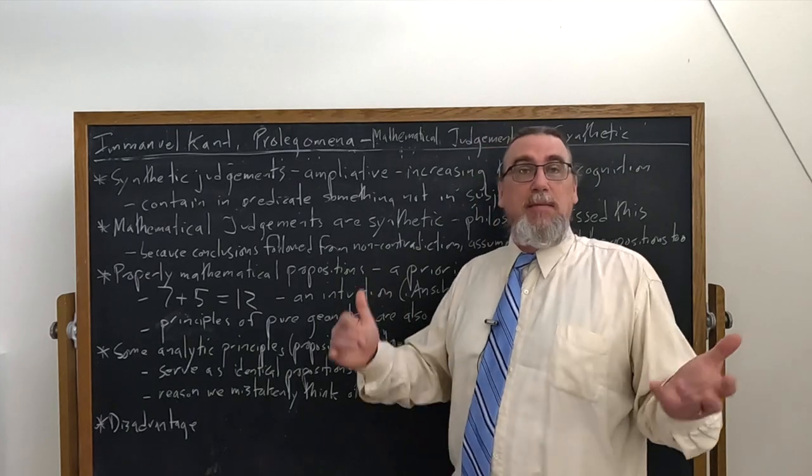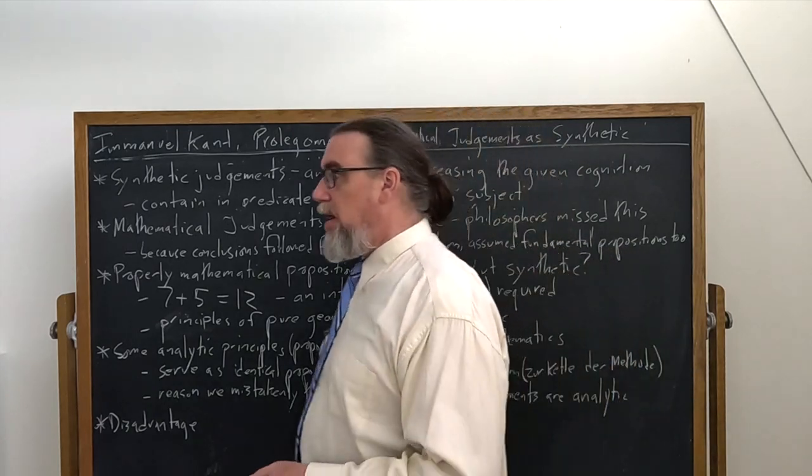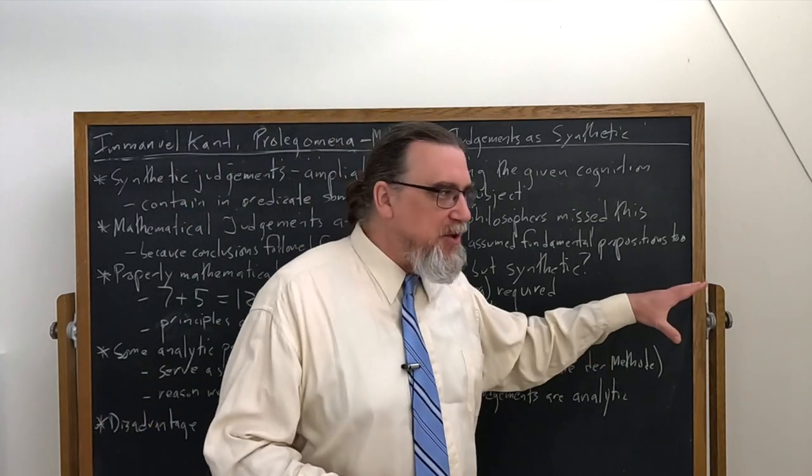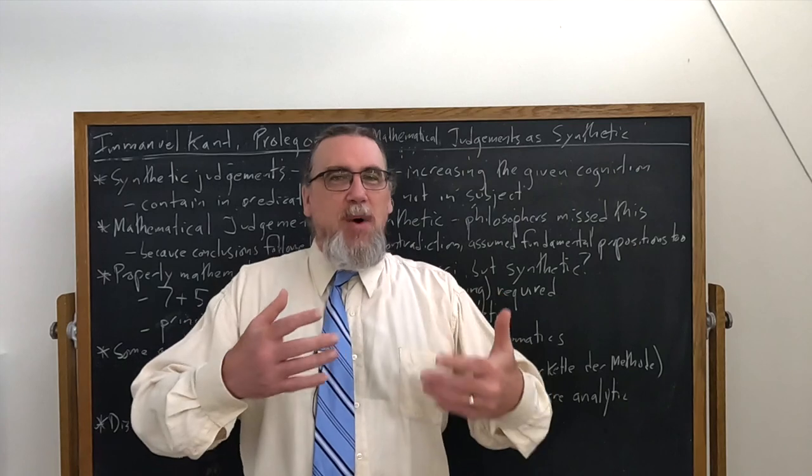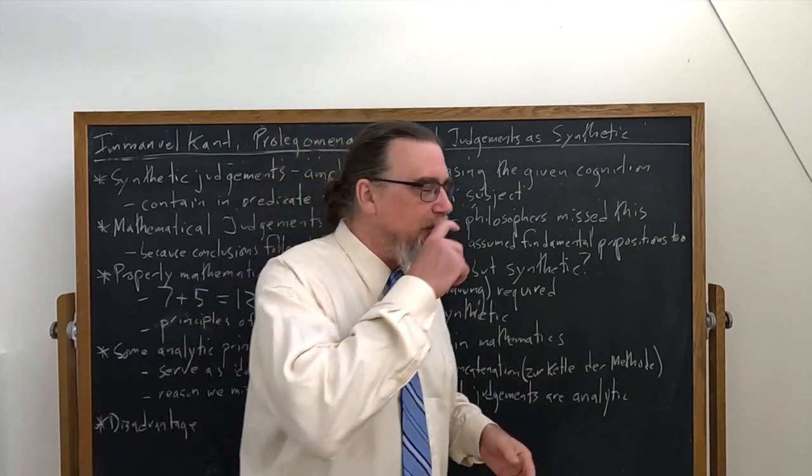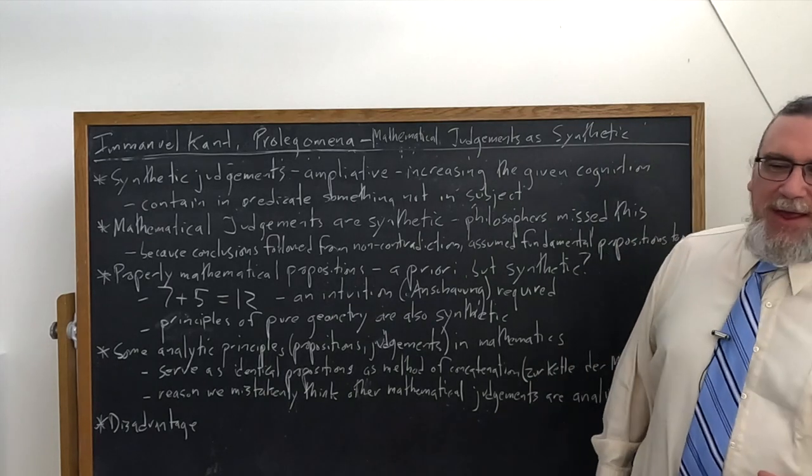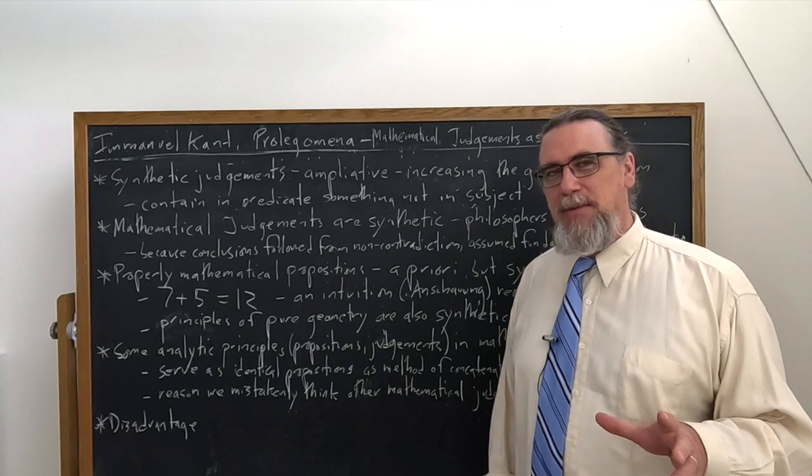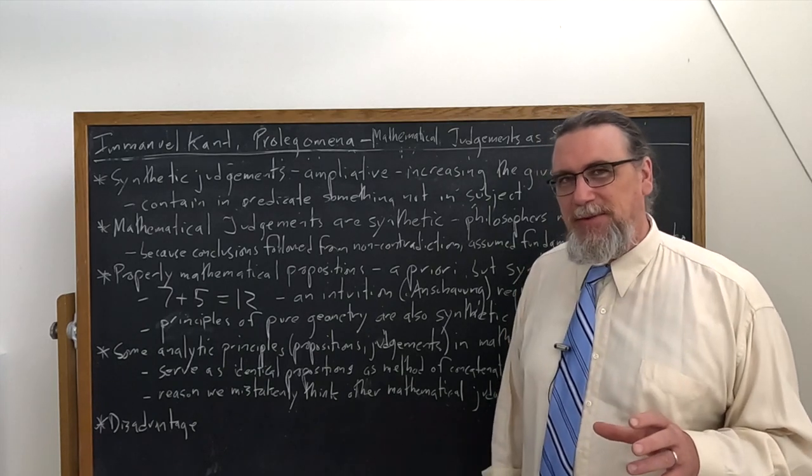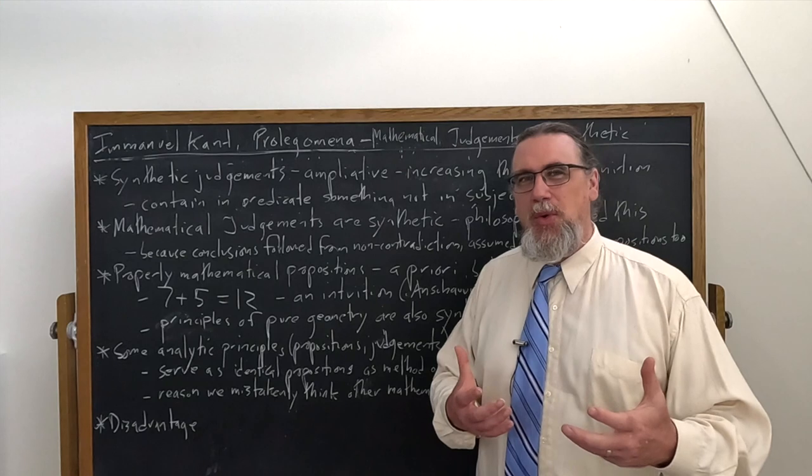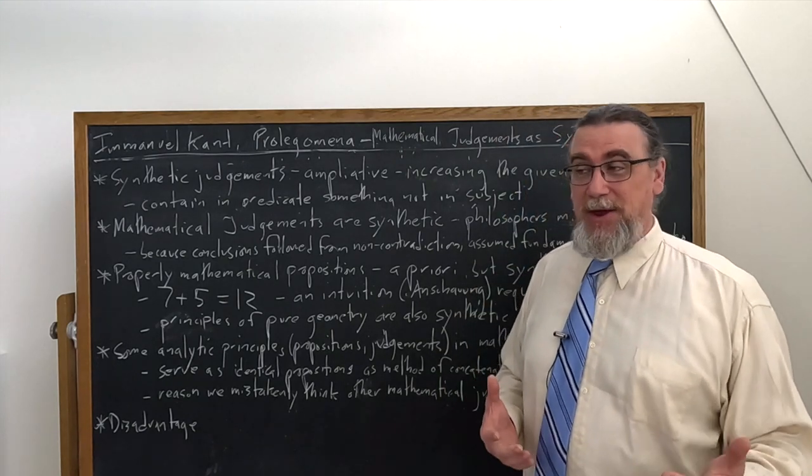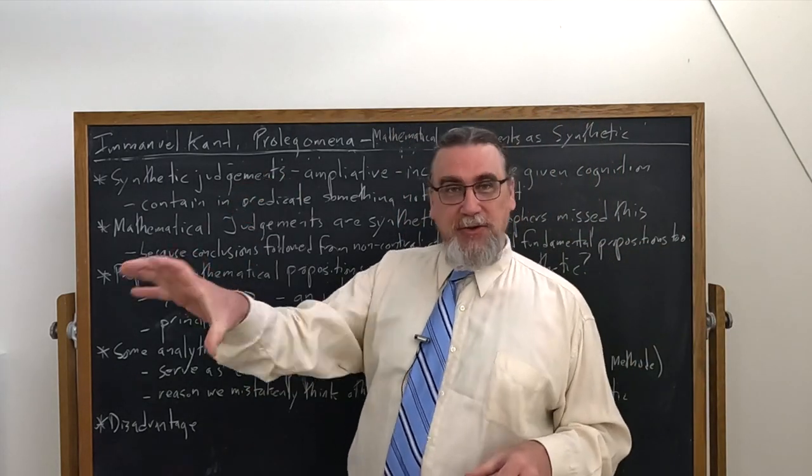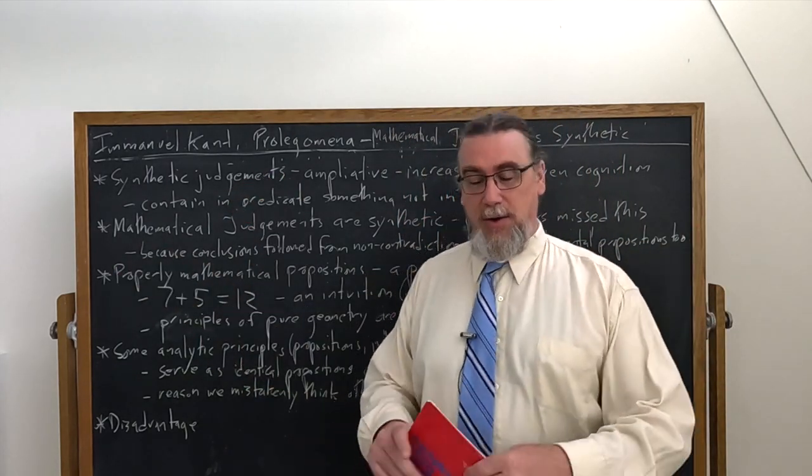You might say, yeah, that's just the way mathematics works. That's what's so cool about it, what's so awesome about this discipline, where unlike just about everything else, you can be sure that one plus one equals two or seven plus five equals 12. And Kant's not saying you can't be sure about it, but you're not getting it by merely analyzing concepts. There's something new that is being added to the picture by saying seven plus five as subject is 12 as predicate over here.